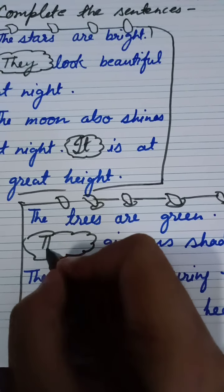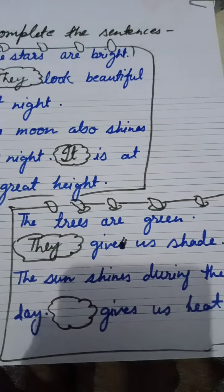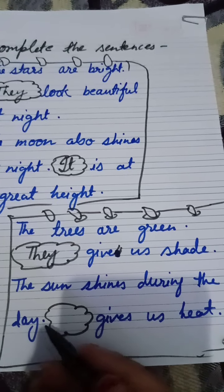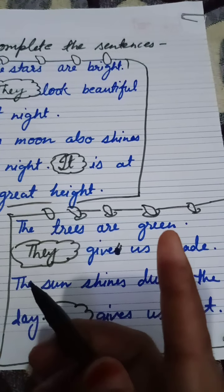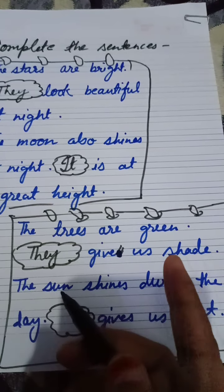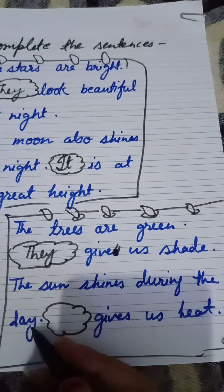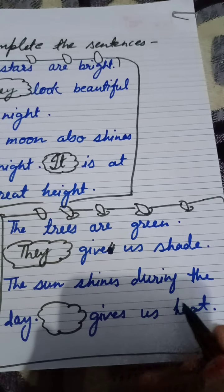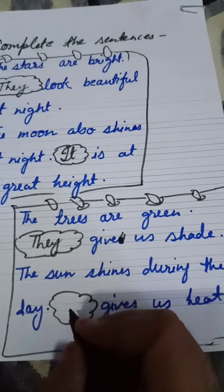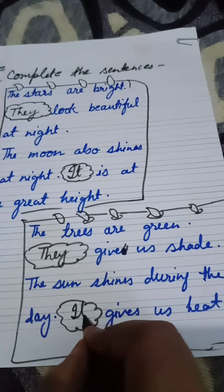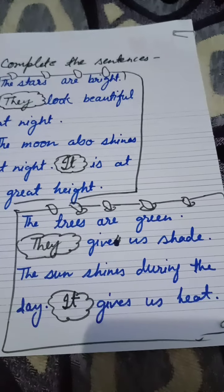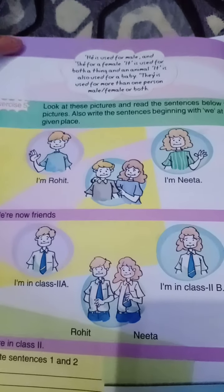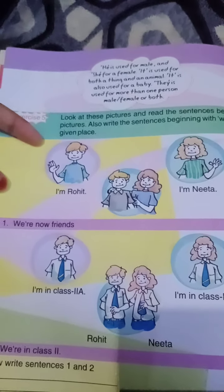'The trees are green — give us shade.' Trees are plural, so we will write 'they'. They give us shade. 'The sun shines during the day.' Sun is singular and neither male nor female, so — gives us heat. We will write 'it'. It gives us heat. This is your reading part.